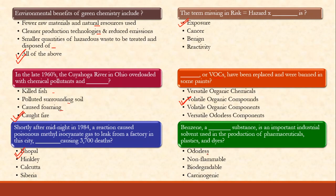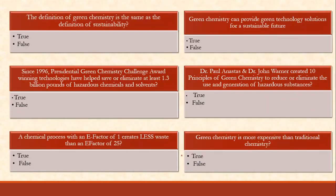Benzene is an important industrial solvent used in the production of pharmaceuticals, plastics, and dyes. Is it odorless? No. Non-flammable? No. Biodegradable? No. It is carcinogenic — yes, it is a cancer-causing compound and it is aromatic.